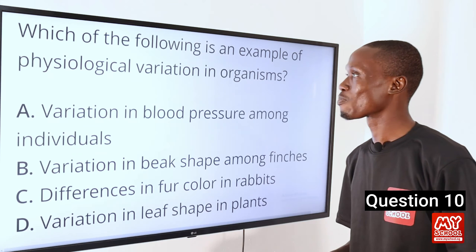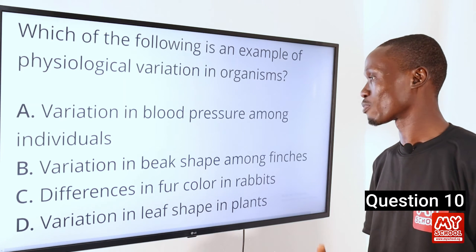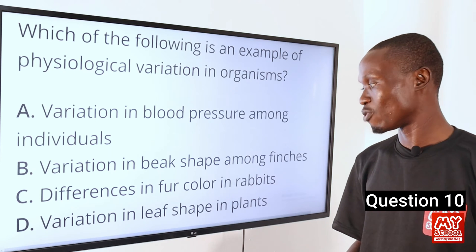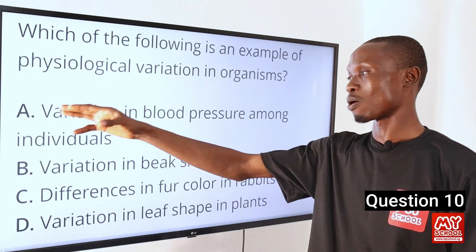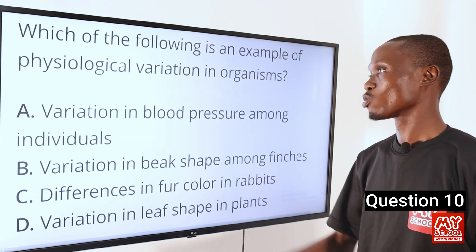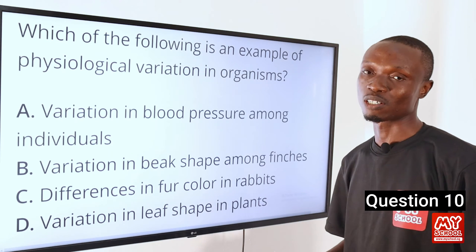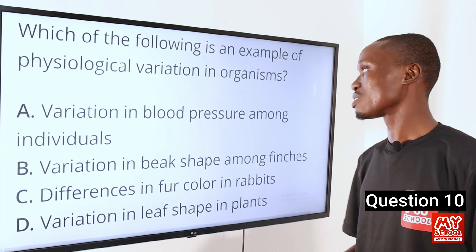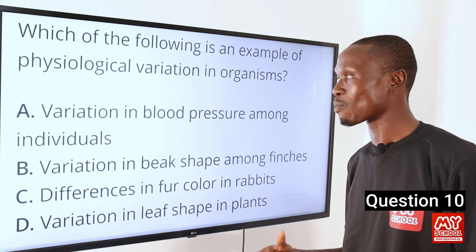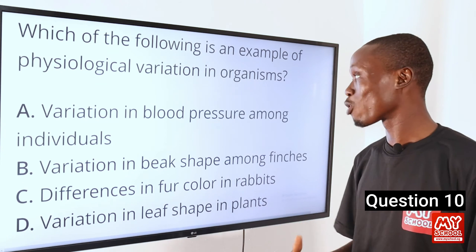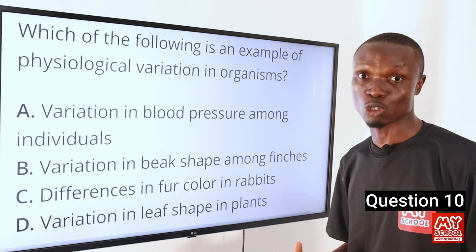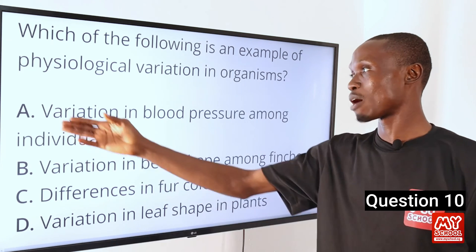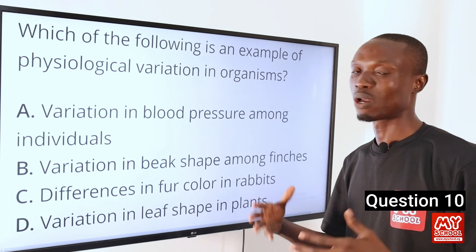Question 10. Which of the following is an example of physiological variation in organisms? A, variation in blood pressure among individuals. B, variation in beak shape among finches. C, differences in fur colour in rabbits. D, variation in leaf shapes in plants. The answer is option A. Physiological variation refers to differences in the functioning or processes among individuals within a species. Blood pressure is a physiological function of the cardiovascular system, influenced by genetic factors, lifestyle, diet, and overall health status.